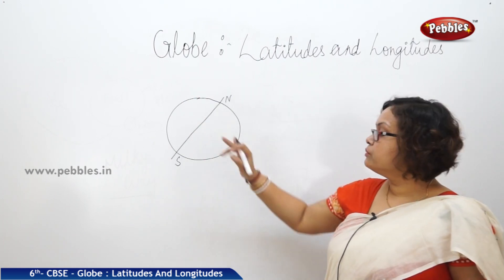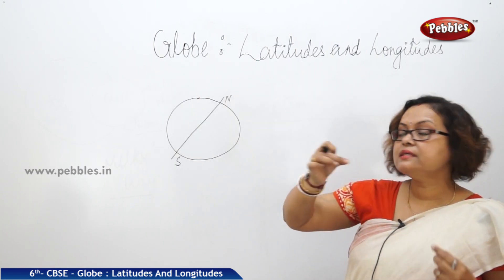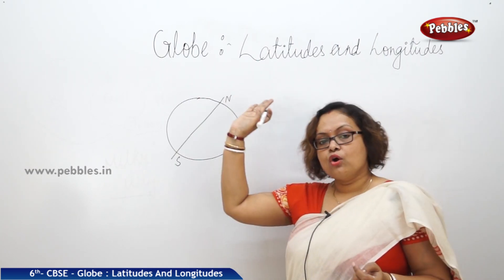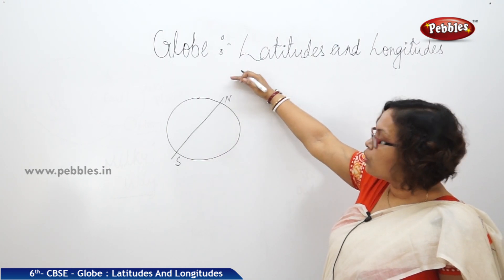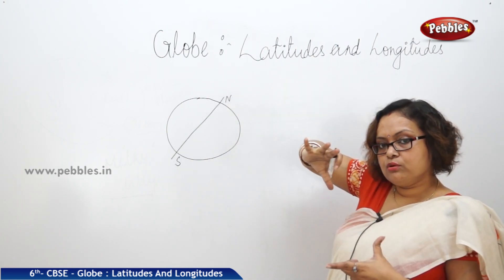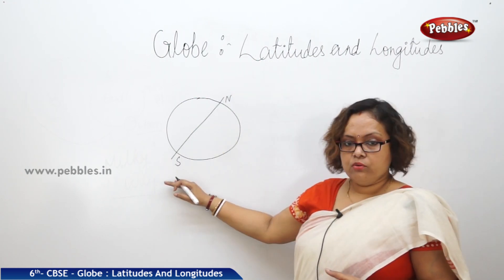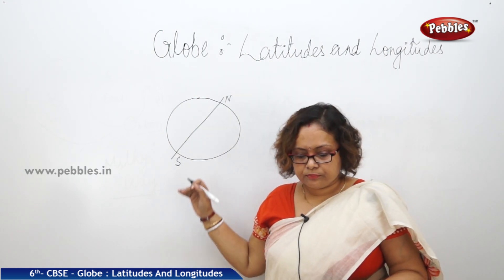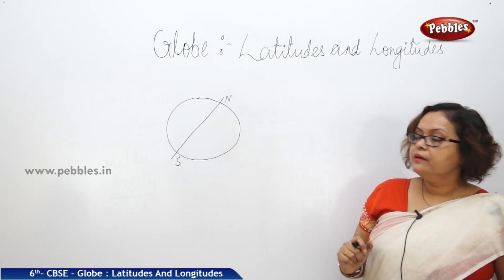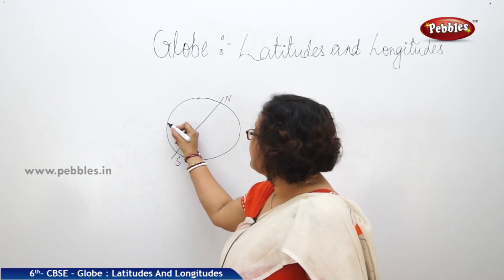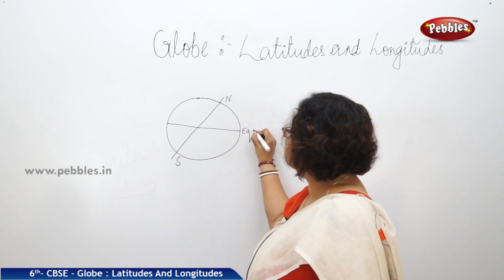When you observe a globe, you can see and feel that the globe is tilted. The upper side of the globe is called the North Pole, and the lower side is the South Pole. Another imaginary line you will find actually divides the Earth into two parts — this is known as the equator.